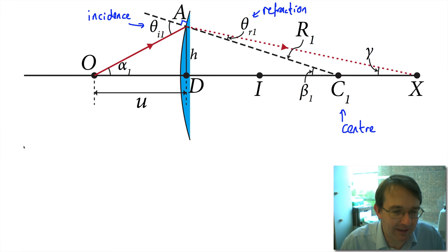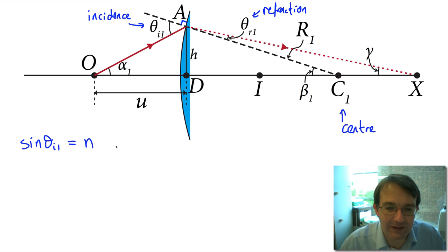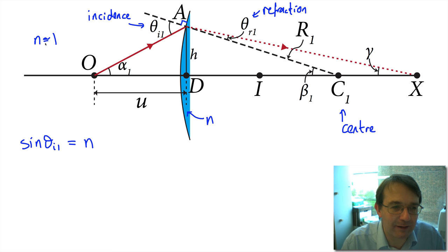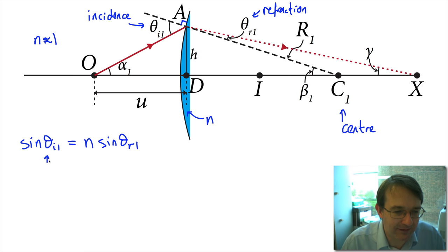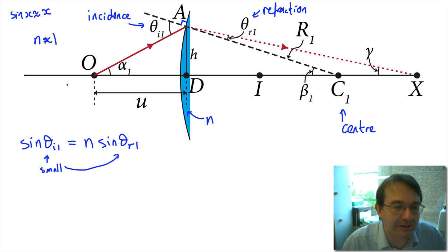This gives us our first equation straight from the law of refraction: sin(θi1) equals the refractive index n times sin(θr1), where the lens has refractive index n and the surrounding air has n ≈ 1. Because the lens size is much less than the radius of curvature R1, both angles are small, so we use the small angle approximation sin(x) ≈ x. This reduces the equation to θi1 = n·θr1.